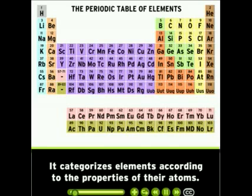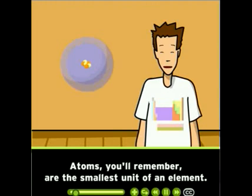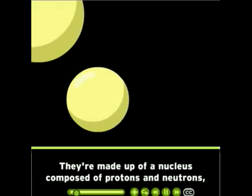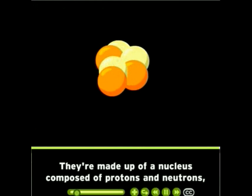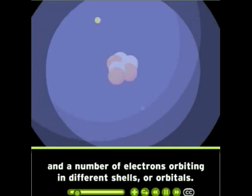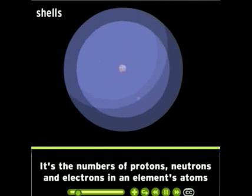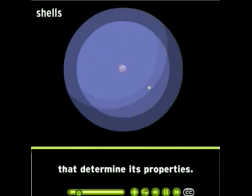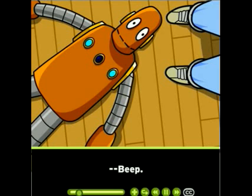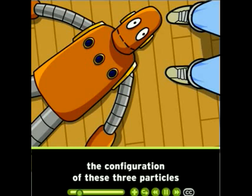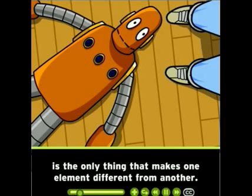It categorizes elements according to the properties of their atoms. Atoms are the smallest unit of an element. They're made up of a nucleus composed of protons and neutrons, and a number of electrons orbiting in different shells or orbitals. It's the numbers of protons, neutrons, and electrons in an element's atoms that determine its properties. The configuration of these three particles is the only thing that makes one element different from another.